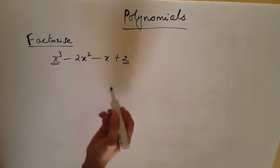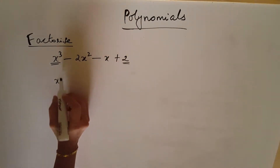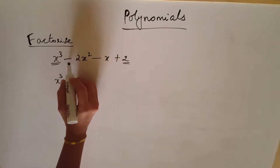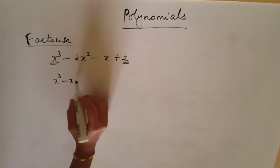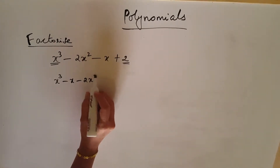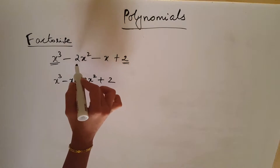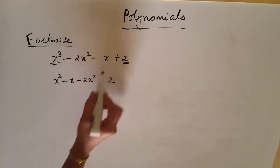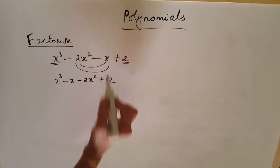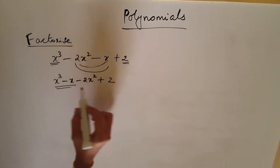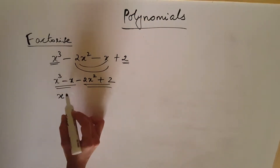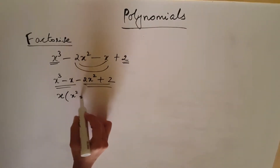Now we will see another method for this. We take x cubed minus 2x squared minus x plus 2, and we interchange the middle two terms: x cubed minus 2x squared plus 2 becomes rearranged. Now take the first two and last two terms. x is common in the first pair, so take x outside giving x squared minus 1.